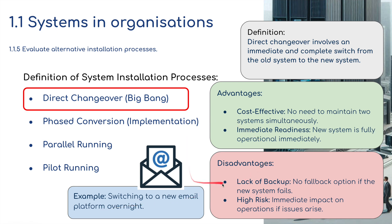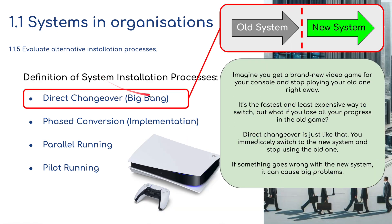A good example of direct changeover might be switching to a new email platform overnight — you have a cut-off point before switching to the new system. Imagine getting a brand new games console, like a PS5, and stopping playing with the old one right away — you sell it and buy a PlayStation 5. It's the fastest and least expensive way to switch, but if you lose all your progress in your old games, that's the risk. Direct changeover is just like that — if something goes wrong with the new system, it can cause big problems.